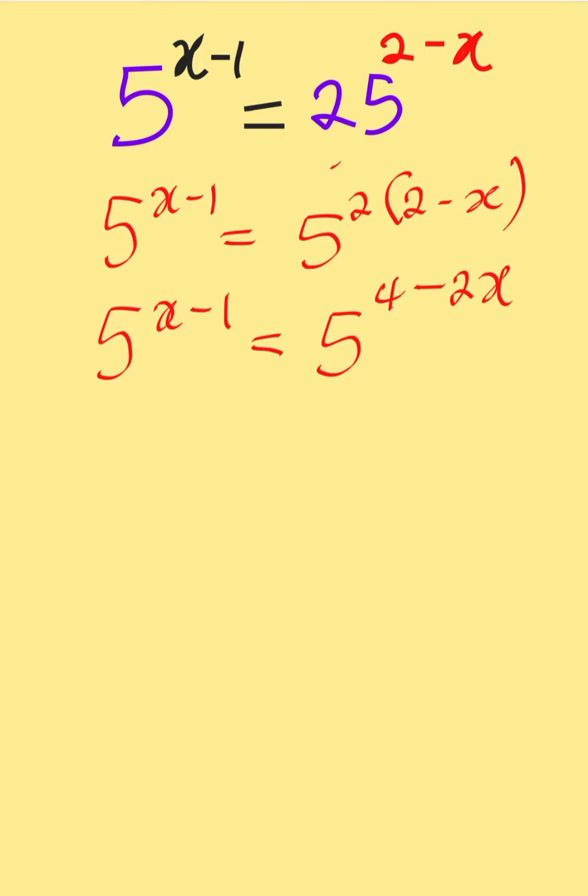Now the bases are the same thing, you can equate the powers. x minus 1 is equal to 4 minus 2x. Collecting like terms, we have x plus 2x is equal to 4 plus 1. So 3x is equal to 5.